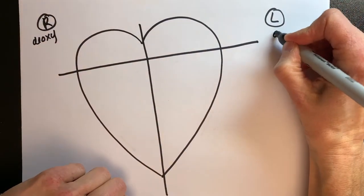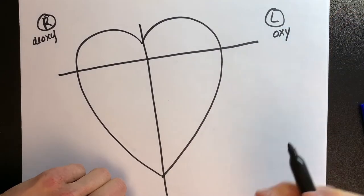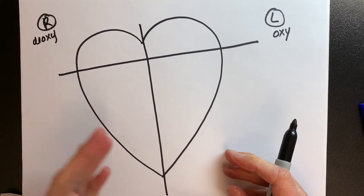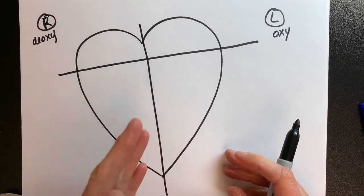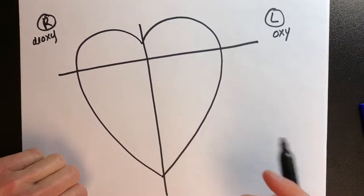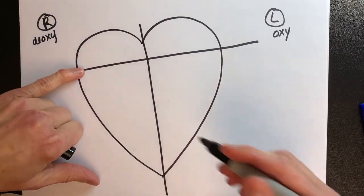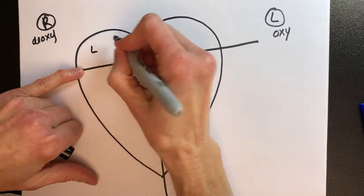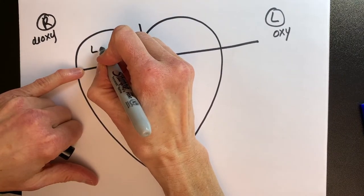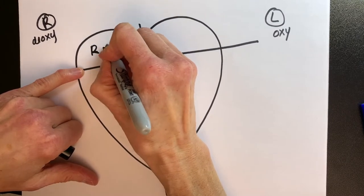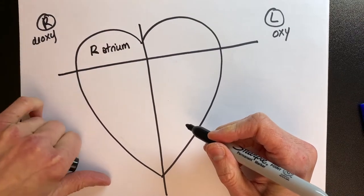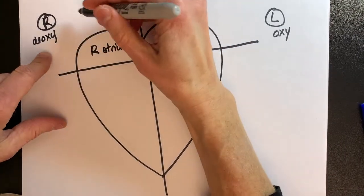The left side has oxygen. So now we're thinking about how we can get the deoxygenated blood over to the oxygenated side, oxygenate it, and then get it out to the body. First we need to bring the blood in, and we can only come in to the upstairs of the heart — the atrium — which is the right atrium.